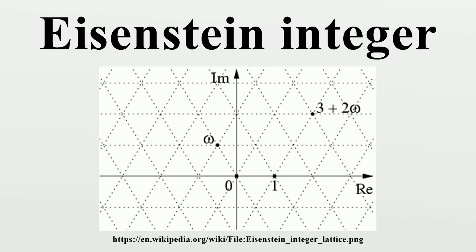Euclidean domain. The ring of Eisenstein integers forms a Euclidean domain whose norm is given by. This can be derived as follows.